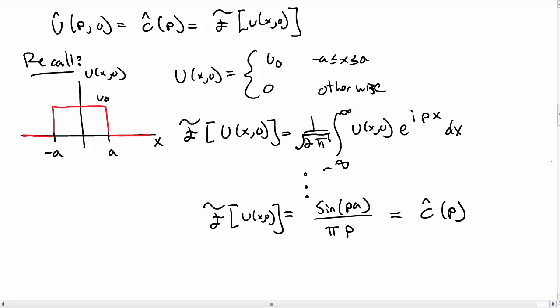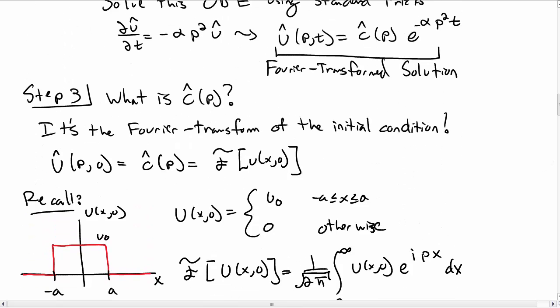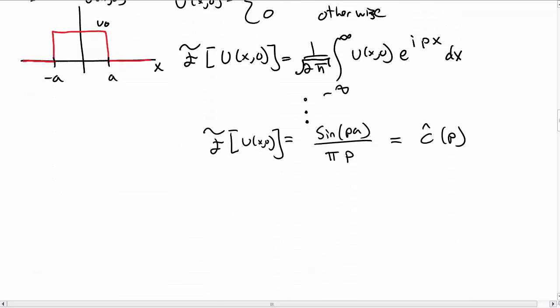And by extension, this is c hat, that unknown constant. So plugging this into our Fourier transform solution above, we now have the solution, u hat of p comma t is sine of p times a over pi p, e to the minus alpha p squared times t.